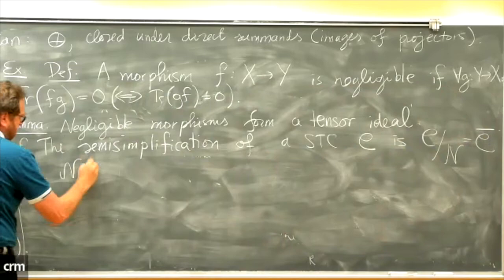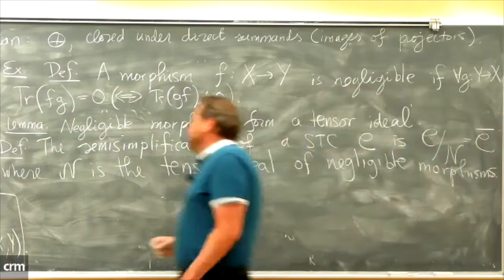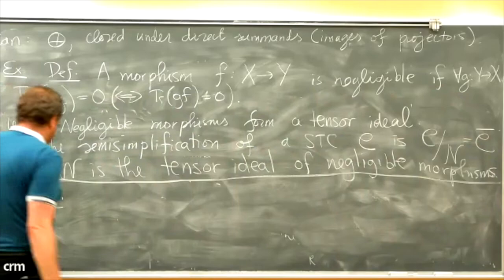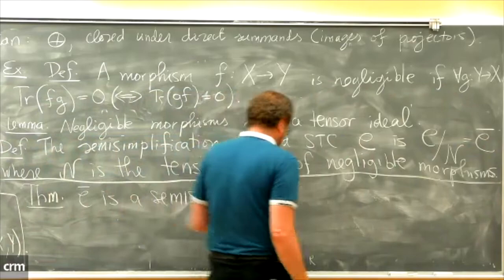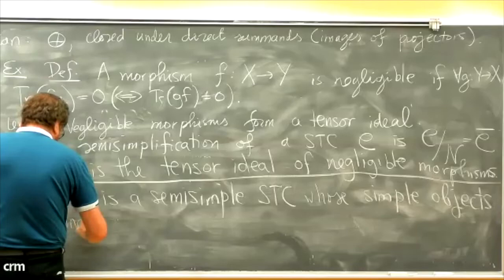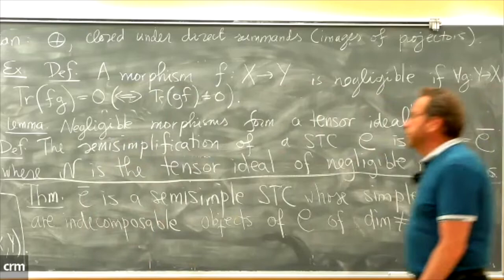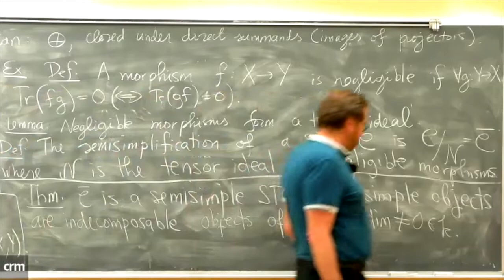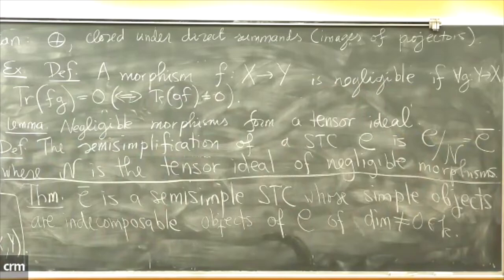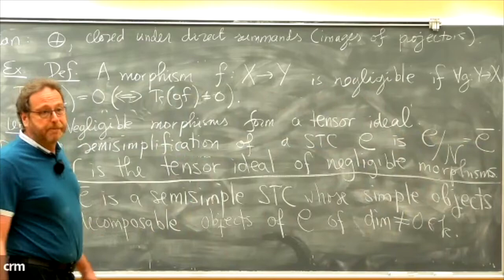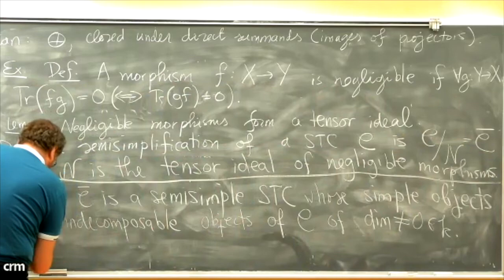The semi-simplification of a symmetric tensor category c is c̄ = c/N, where N is the tensor ideal of negligible morphisms. The key theorem is that c̄ is a semi-simple symmetric tensor category. Its simple objects are the indecomposable objects of c whose categorical dimension is not zero. A semi-simple category is one where every object is a direct sum of simple objects. If c is already semi-simple, then N = 0 and c̄ = c.